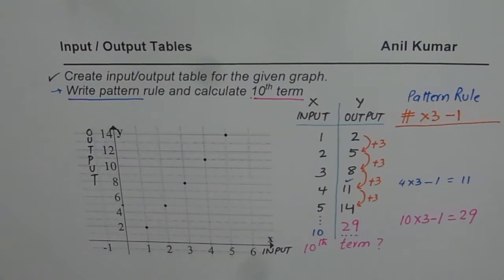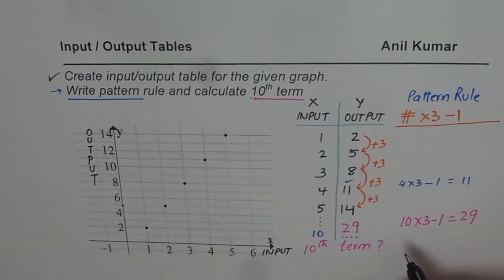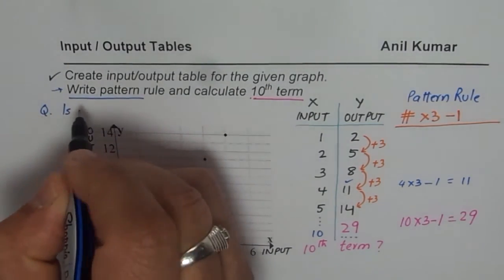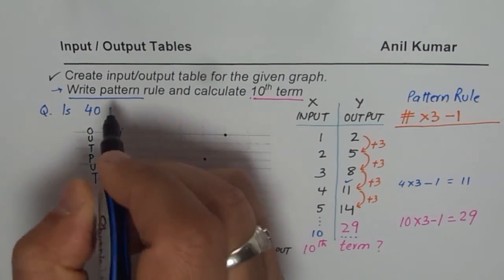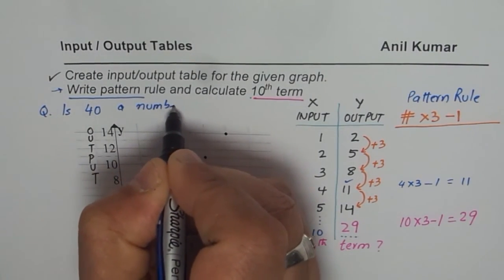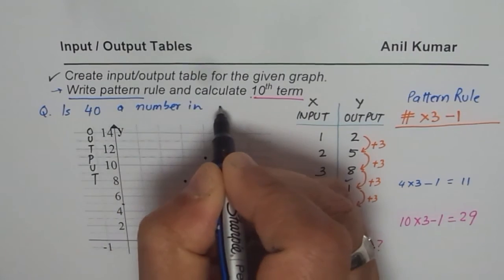So that is how you get the 10th term. So as an exercise, you could find 50th term, and figure out if 40 is in our output or not. So question for you, which I am writing here is, is 40 a number in output?